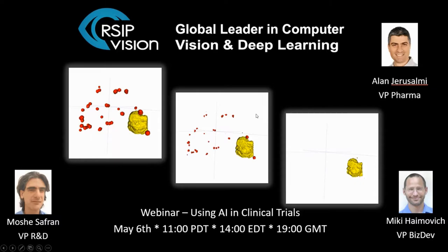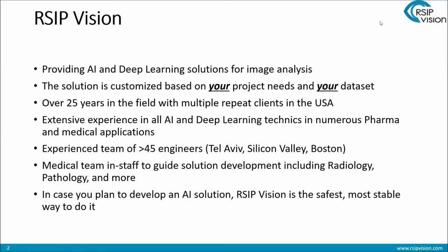A few words about RSIP Vision. We are providing AI and deep learning solutions for image analysis. That's the only deep learning solutions we provide. We don't do genomics or NLP or anything like that. We stick to what we do best, which is image analysis and computer vision. The solution is customized based on your project needs and your data set. This industry is still very far from standardization, so the chances you'll find an off-the-shelf solution that really fits your needs are pretty slim.